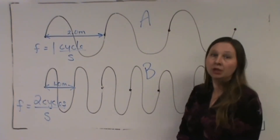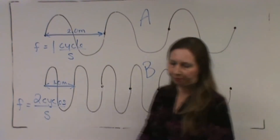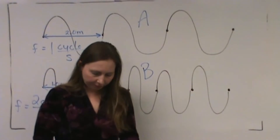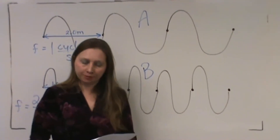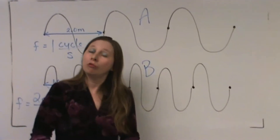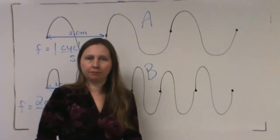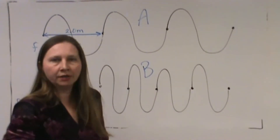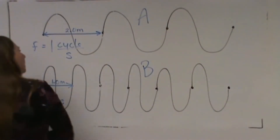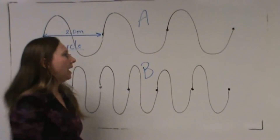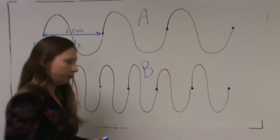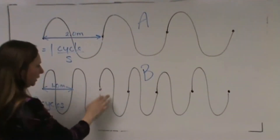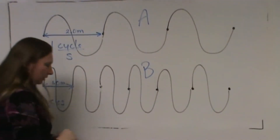The one last thing we need to talk about is the period of a wave. The period of a wave is the amount of time required to complete one cycle. One cycle would be from here to here on the wave.